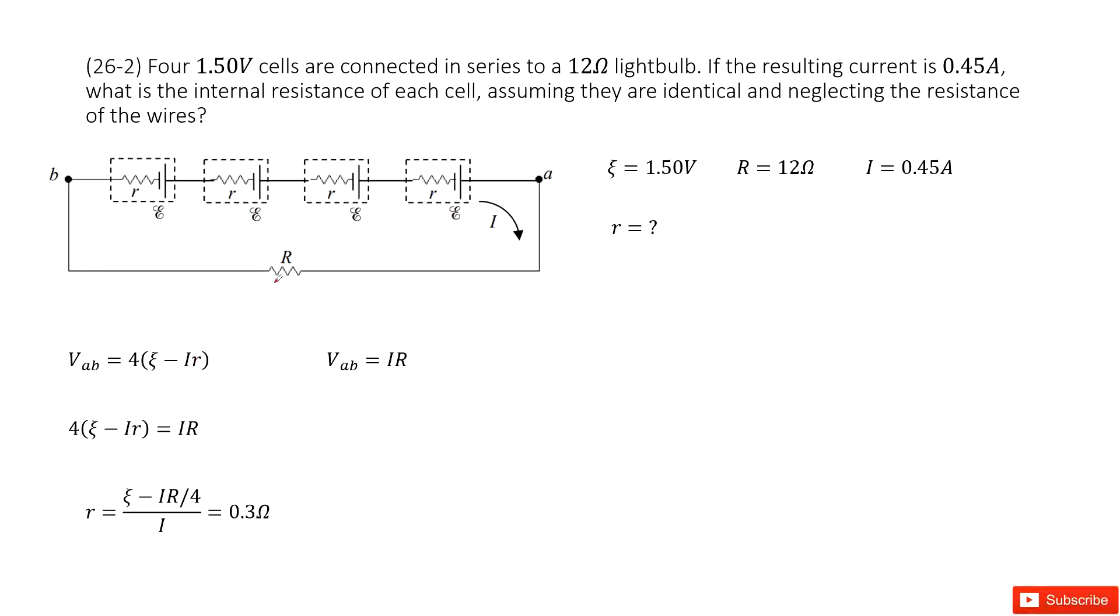And also, we know these terminal voltages will just push the current through this lightbulb. And this is Ohm's law, right? So terminal voltage VAB equals the current times R. Now you can see we have two functions.